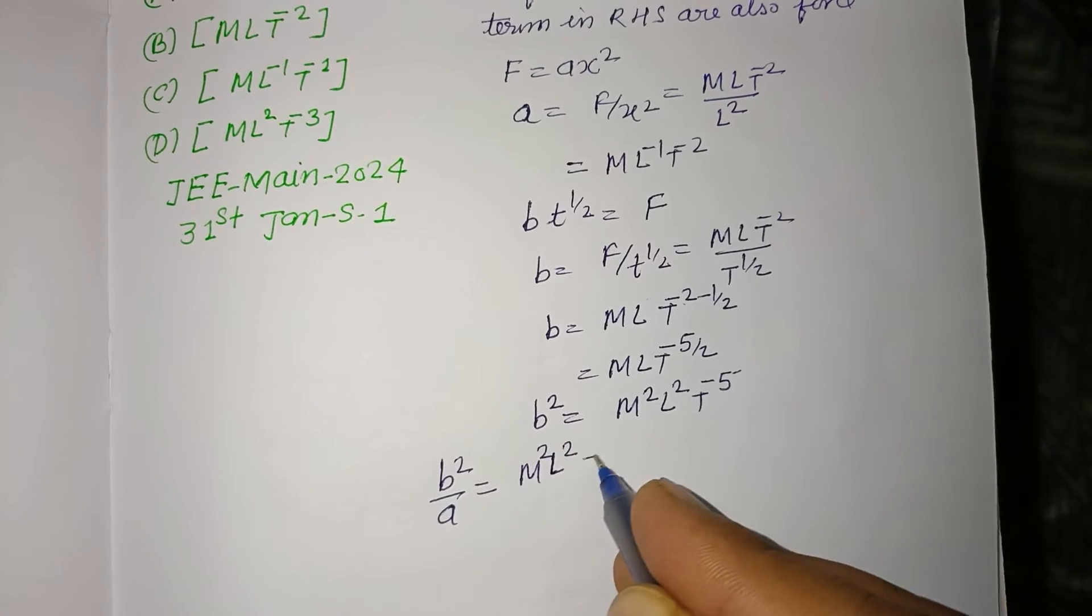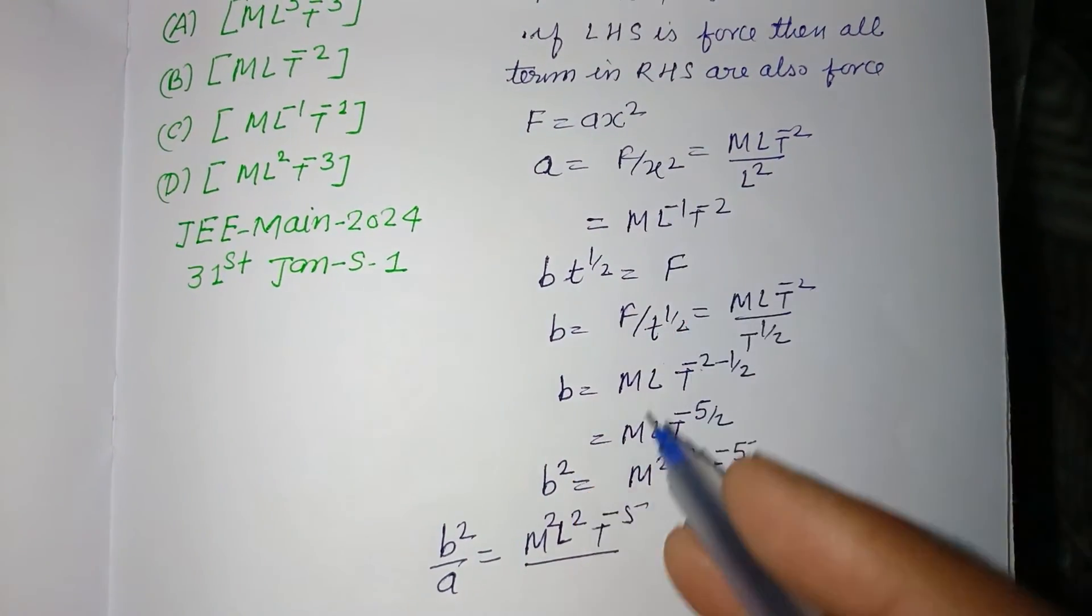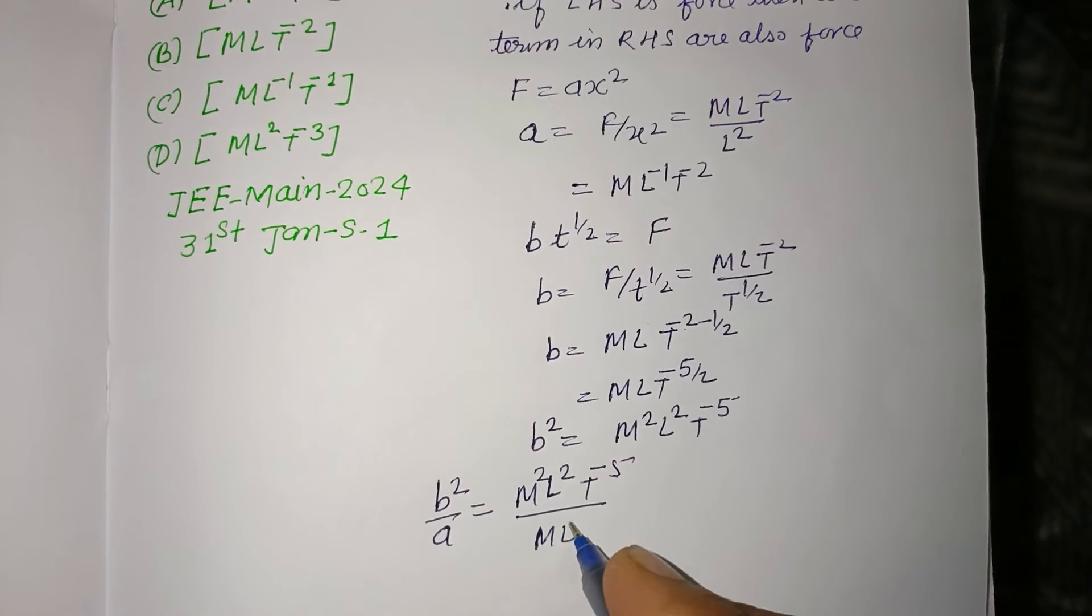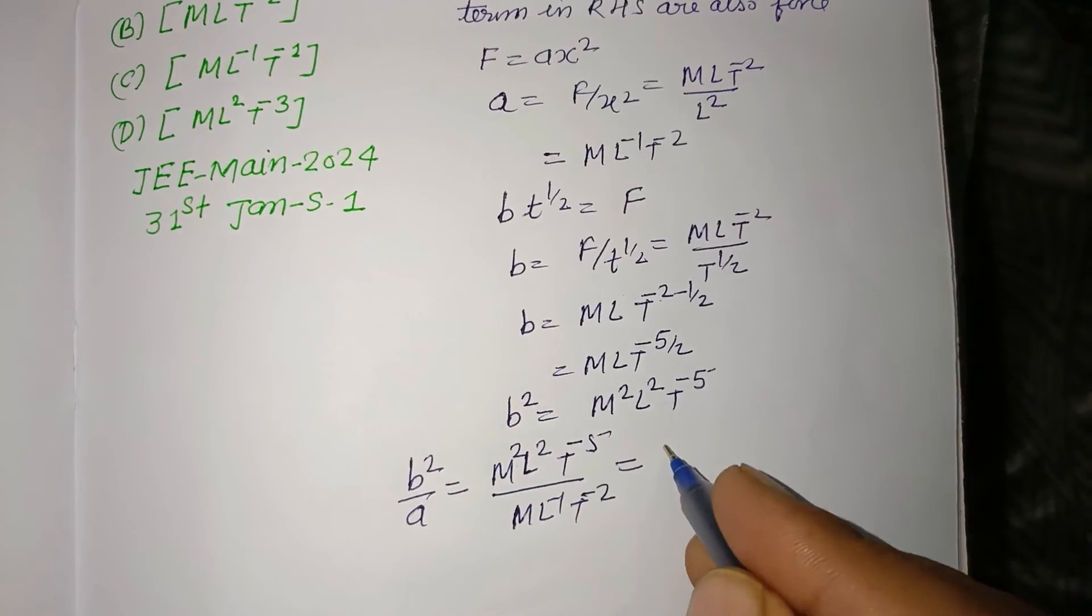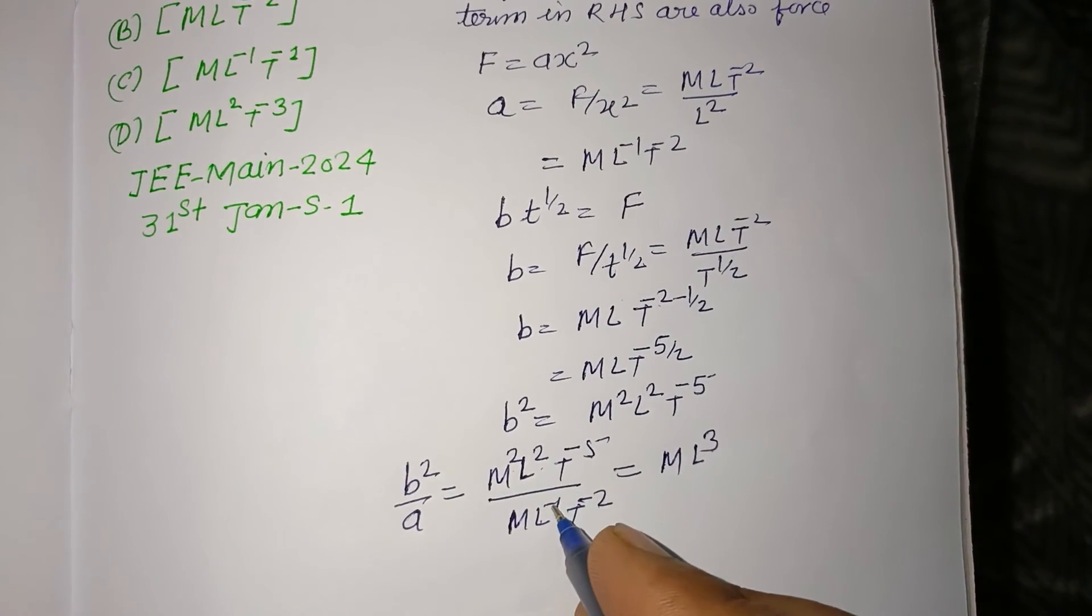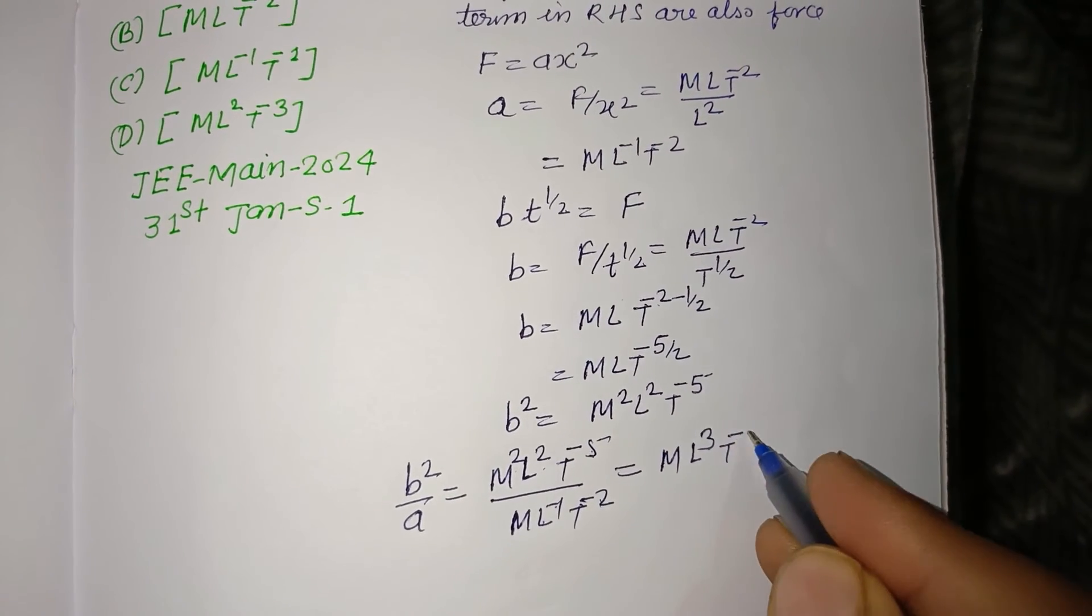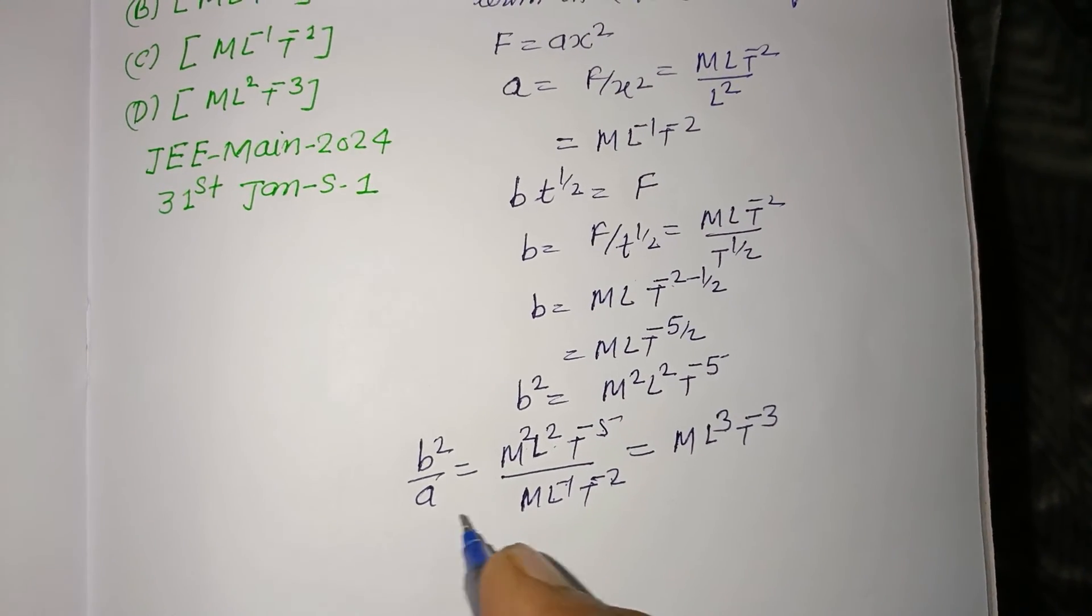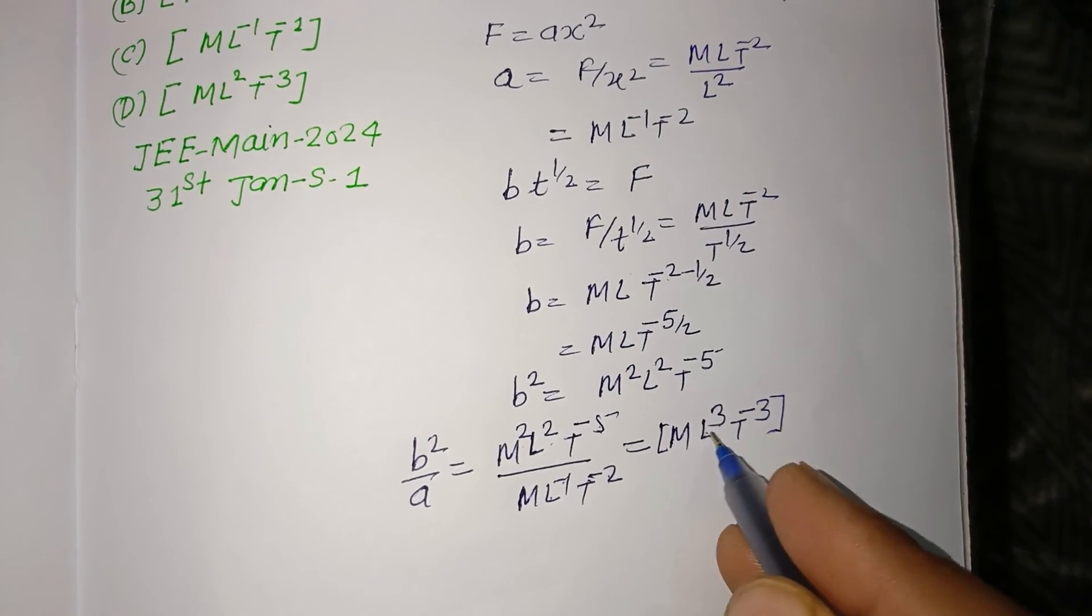M²L²T^(-5) upon a, which is ML^(-1)T^(-2). So here M remains, this is L³ (2 plus 1), and -5 plus 2, this is T^(-3). So dimension of b² over a is ML³T^(-3), which is found in option A.